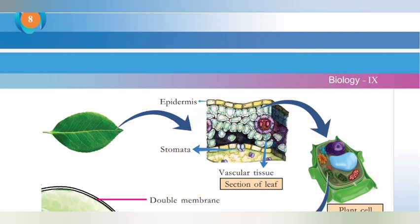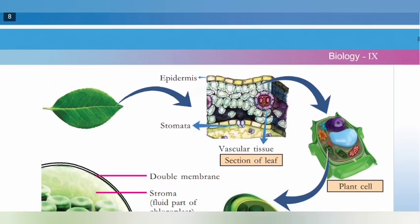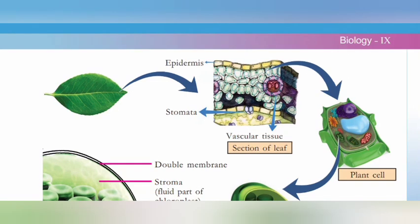We will learn about stomata. Let's get into the science textbook. Before getting into the stomata, there is a leaf in the diagram. There is a cross-section to enlarge it. There is a top layer of epidermis, stomata, and vascular tissues visible in the section.